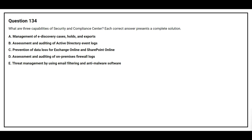Question number 134. What are three capabilities of the security and compliance center? Option A: management of e-discovery cases, hold and exports. Option B: assessment and auditing of Active Directory event logs. Option C: prevention of data loss for Exchange Online and SharePoint Online. Option D: assessment and auditing of on-premises firewall logs. Option E: trade management by using email filtering and anti-malware software.